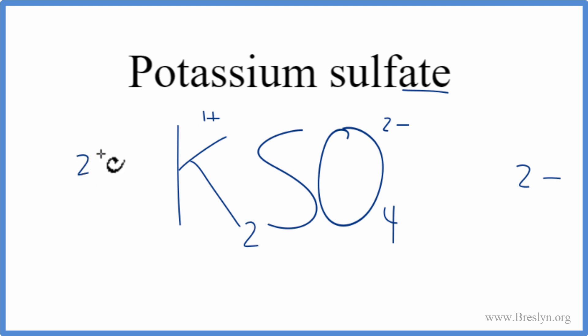2 times plus 1, that's 2 plus. So 2 plus, 2 minus, that adds up to zero. So this is the correct formula for potassium sulfate.